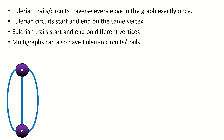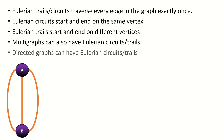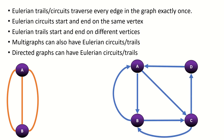Here you can see an example of a multi-graph with an Eulerian trail. Directed graphs, whose edges are represented by arrows and can only be traversed in one direction, can also have Eulerian circuits and trails, such as the directed graph shown here. All that matters is that there is a walk through the graph that uses every edge exactly once.